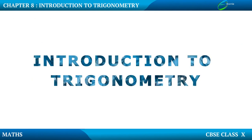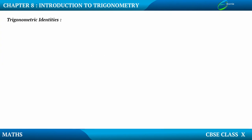Introduction to trigonometry and trigonometric identities. Basically we have three identities. Let me write down all three identities first. Your first identity is sin squared theta plus cos squared theta equal to one.